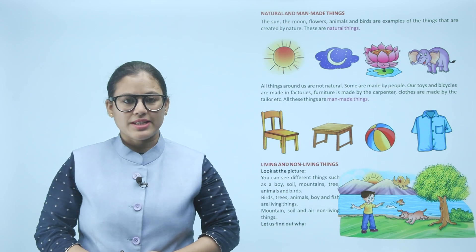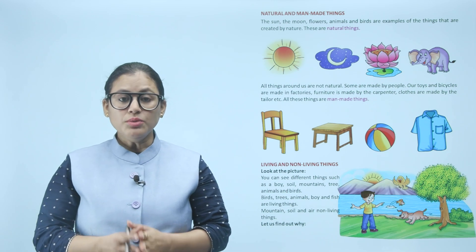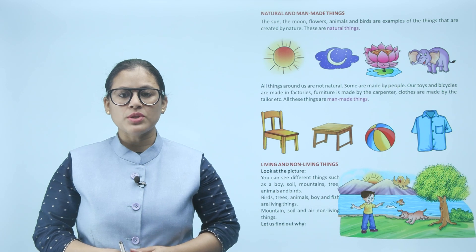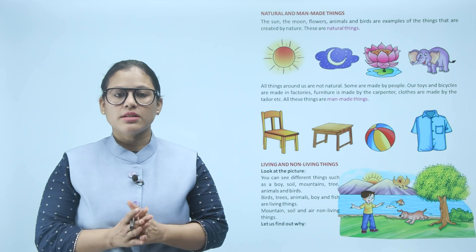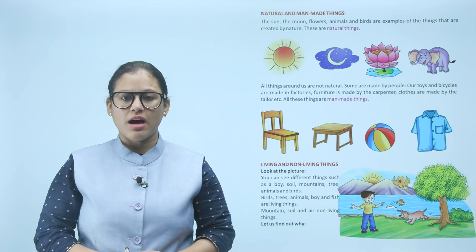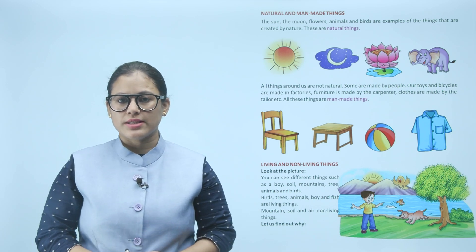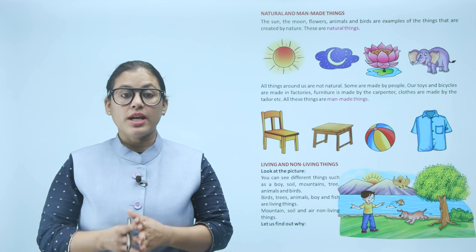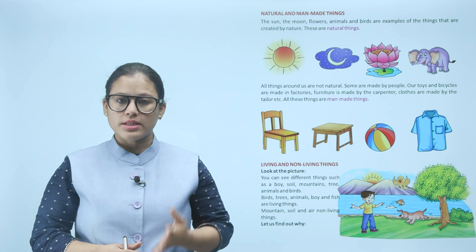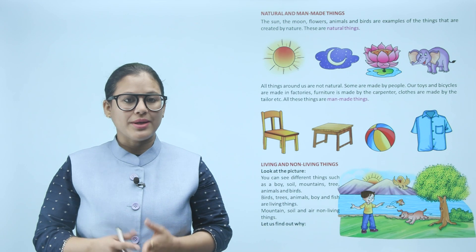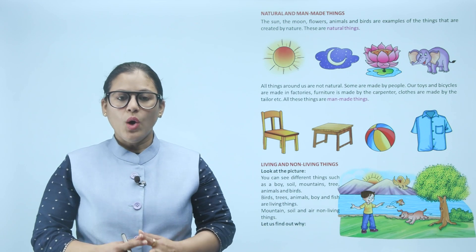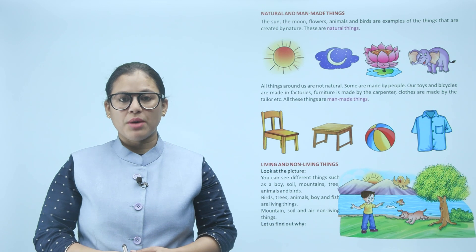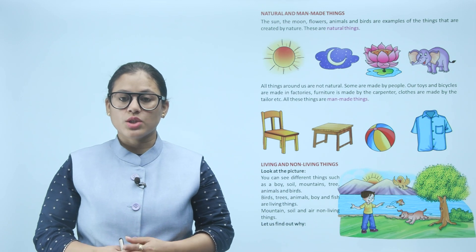Natural and man-made things: the sun, moon, flowers, animals, and birds are examples of things created by nature — these are natural things. Natural things aapki wo hoti hain jinhein nature ne create kiya hai, jaise ki stars, sun, flowers, animals.